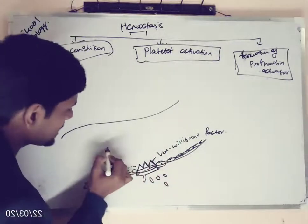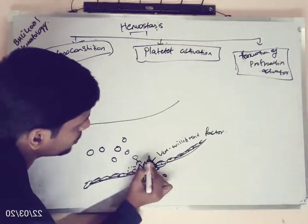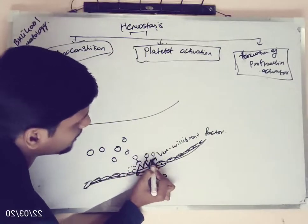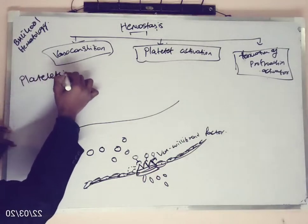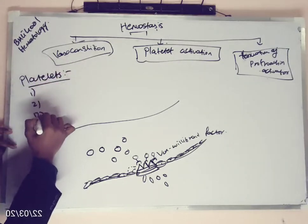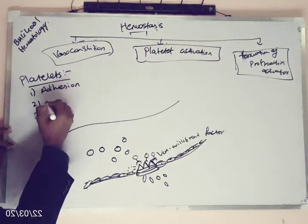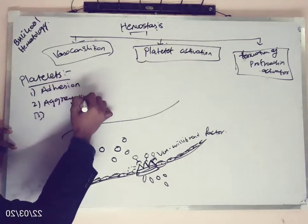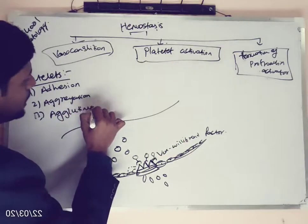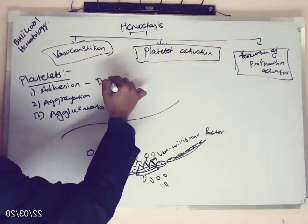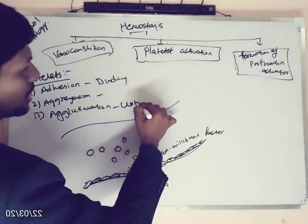There are some conditions in which people won't have von Willebrand factor — if they don't have it, platelets can't bind. Platelets will do three important functions in bleeding. First one is adhesion. Second one is aggregation. And third one is agglutination — Triple A. Adhesion is also called binding. Aggregation means many platelets get aggregated, and agglutination means clotting.